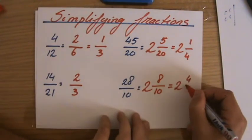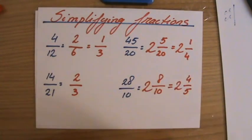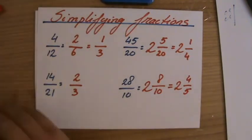Well, that gives me 4 over 5. 2 and 4 over 5. Do 4 and 5 share a factor except 1? No they don't. That is my answer.